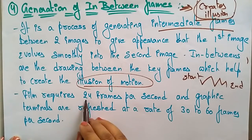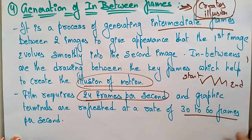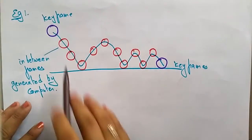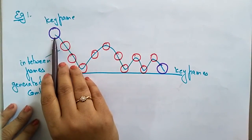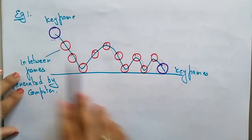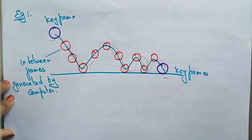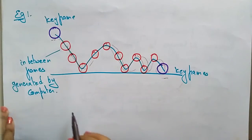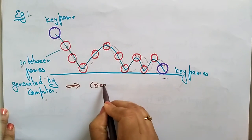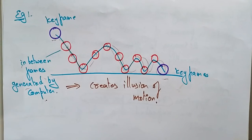A film requires approximately 24 frames per second, and graphics terminals are refreshed at a rate of 30 to 60 frames per second. For example, the ball bouncing — jumping and bouncing to its final frame — those are the keyframes. The movement of the ball in between is the in-between frames, generated by the computer, which creates the illusion of motion.